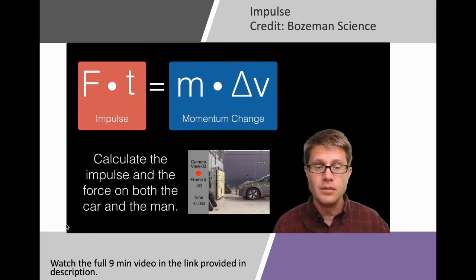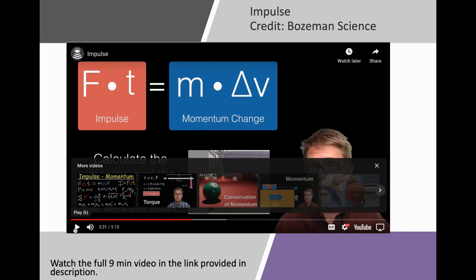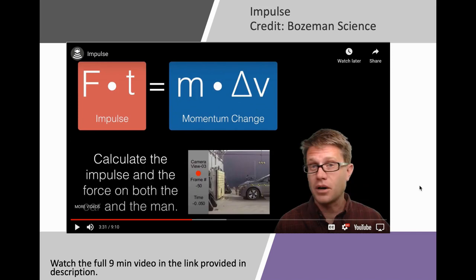It's a nine-minute video, and I highly suggest that you check out the link provided in the description and watch it in full. The problem he does is excellent — you are able to calculate for both the car and the crash test dummy, and it shows how delta p and impulse are interchangeable and how you can use those values to solve really complex problems.